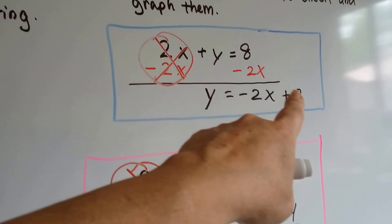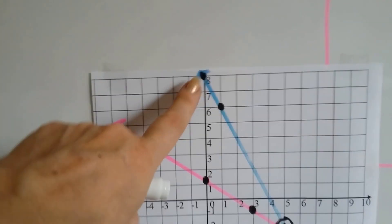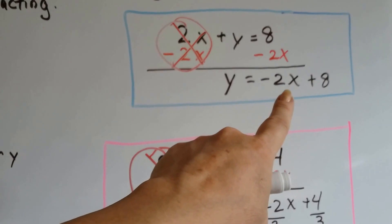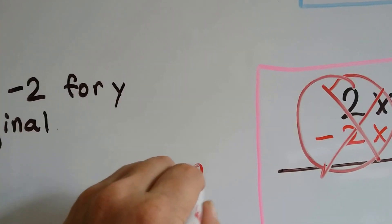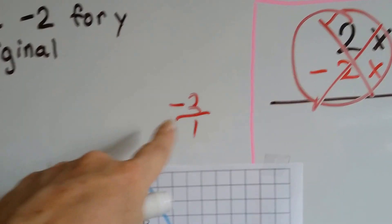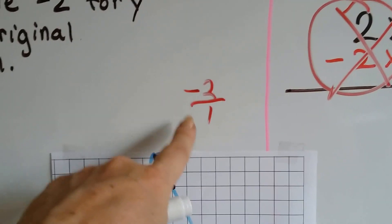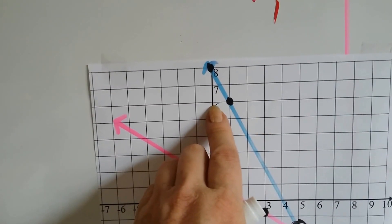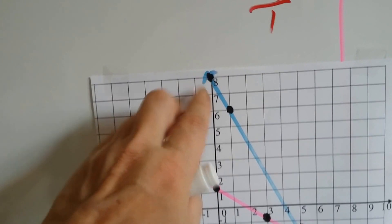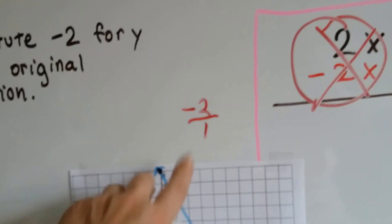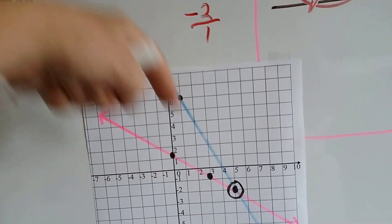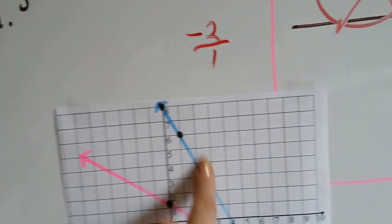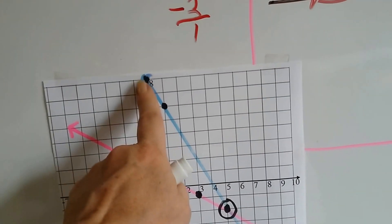The blue one, the y intercept is 8. So that's right here. And it's got a slope of negative 2. So we know that negative 2 means that's the rise over the run. So it's the same as negative 2 over 1. So that's our rise, that's our run. So what we need to do is go down 2, 1, 2, and our run is 1, so we need to go over. So we have our two points right here. And we knew because it was negative that the line was going to come down in this direction. When the slope is negative, it falls to the right. So we drew our blue line coming down through here, through those two points.